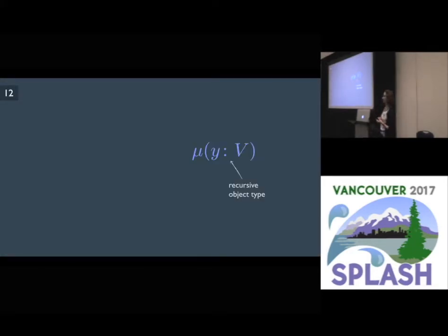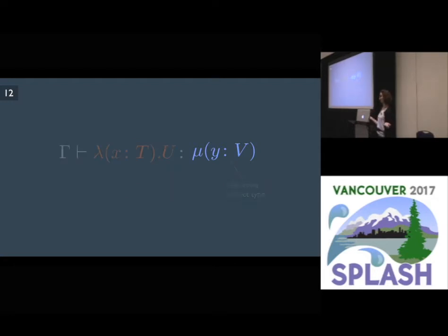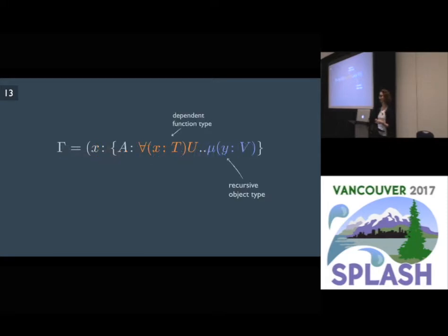Let's look at this type — it's a recursive type and it's the type of objects in DOT. Suppose that we have a value V that under some type in context gamma is typed with this object type. If values in DOT are either objects or functions, what is V? Well, you might think it's an object, but in fact it's a function. And it's possible because it all depends on the typing context in which we type V. So if we have a context with this type, which is a type declaration lower bounded with a function type and upper bounded with an object type, then we can have the following derivation.